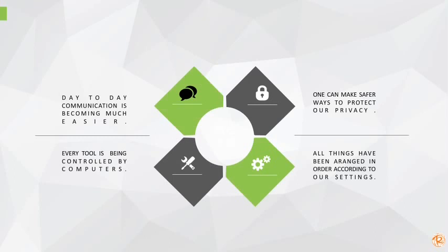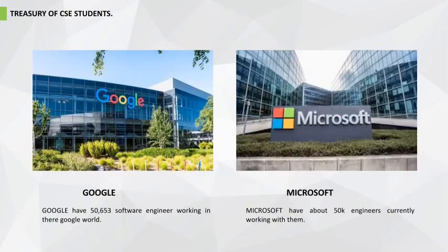These are the four main parts of CSE. CSE has made day-to-day communication much easier. One can make safer ways to protect our privacy. Every tool is being controlled by computers, and all things have been arranged in order according to our settings. Notably, Google has 50 plus software engineering positions in their world.